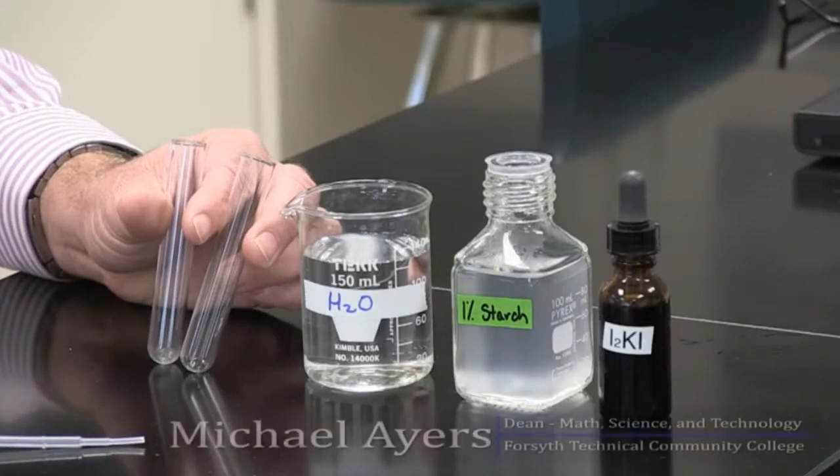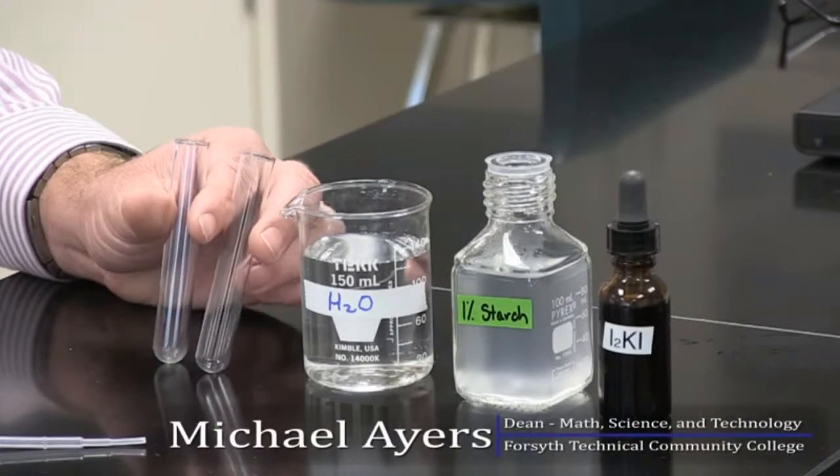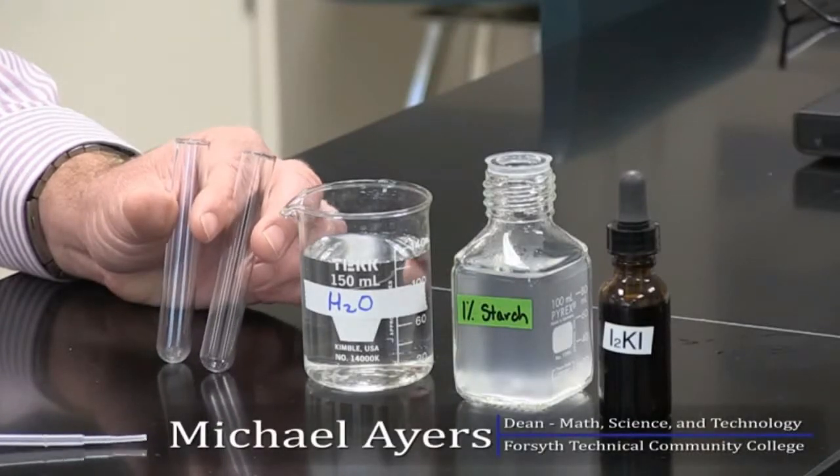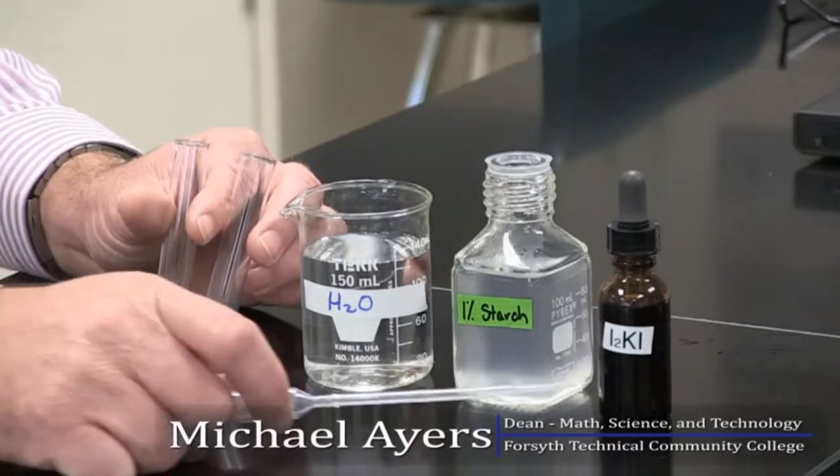So we want to do a test now that indicates the presence of a polysaccharide called starch. And the indicator that we use for this is something called IKI, it's just an iodine compound.